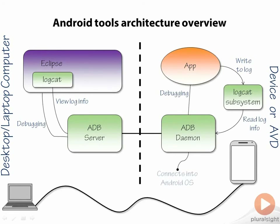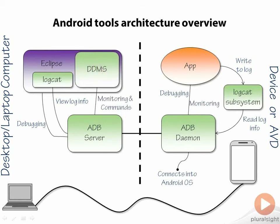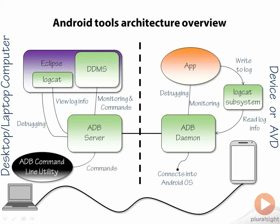The ADB daemon running on the device or emulator connects closely with the system so it can interact with the operating system itself, and in the case of virtual devices, it can even interact with the virtual device's behavior. A utility called DDMS allows you to monitor your application and issue commands into the operating system and emulators. The ADB system also has a command line utility where you can open a Windows command line and issue commands to interact with the ADB system.